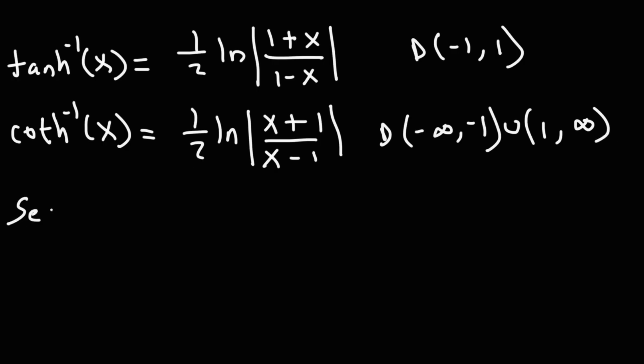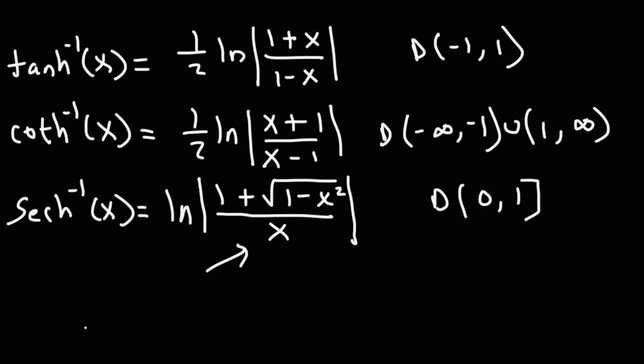Next up, we have the inverse hyperbolic secant function, and that's going to be the natural log of 1 plus the square root of 1 minus x squared divided by x. The domain for that is going to be 0 to 1, so we have a bracket at 1. 1 is included, but not 0. If we put a 0, it's going to be undefined in that fraction.